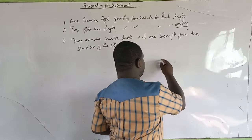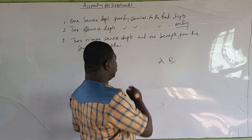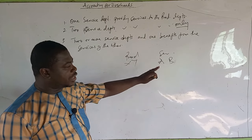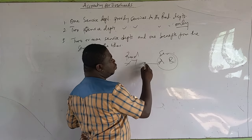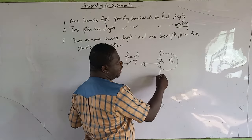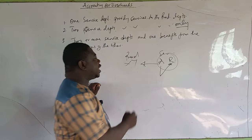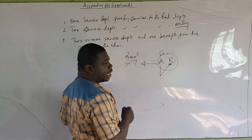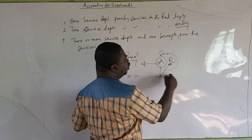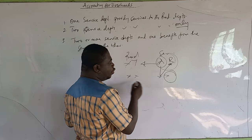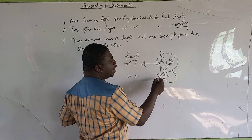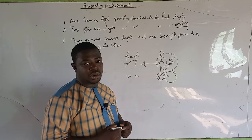You can have two service departments: Service Department A and Service Department B, with production departments X and Y. For the production departments, they will always benefit from the service departments. However, if Service Department A also benefits from B, then it means it's not only the production departments X and Y that are benefiting — Service Department A is also benefiting. So after we have gotten the total overhead for each of them, if we want to reapportion that of B, we are not going to reapportion it only to the production department. Some will also be given to Service Department A.